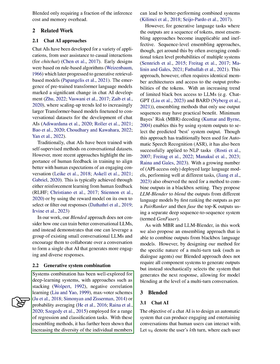Combining systems has been a well-explored area in deep learning, with methods such as stacking, negative correlation learning, max voter schemes, and probability averaging being used for a range of regression and classification tasks. It's been shown that increasing the diversity of the individual members can lead to better performing combined systems. However, for generative language tasks where the outputs are a sequence of tokens, most ensembling approaches become inapplicable and ineffective.